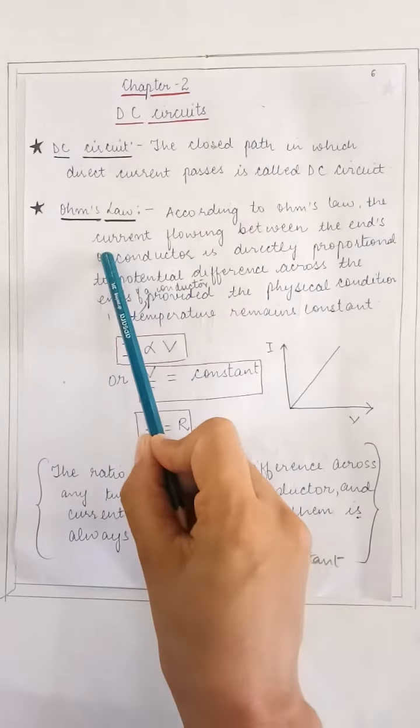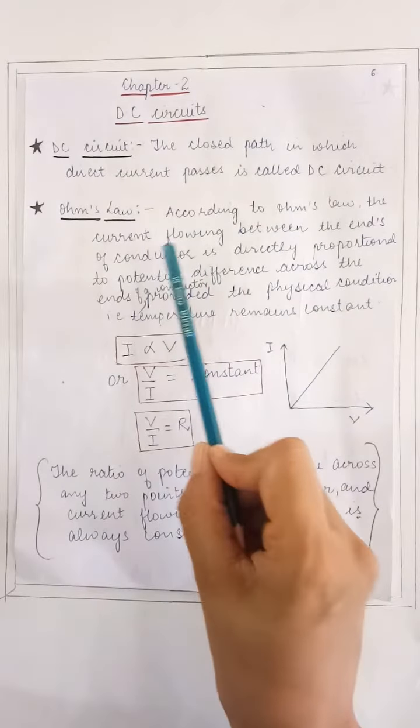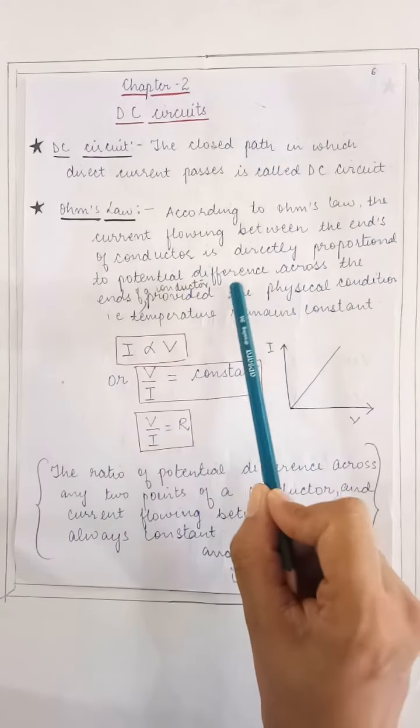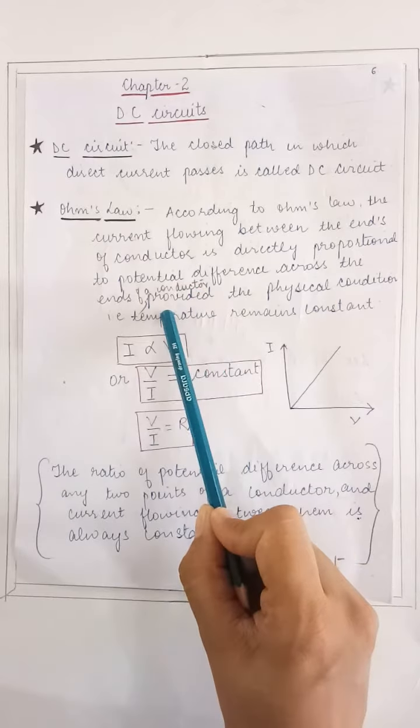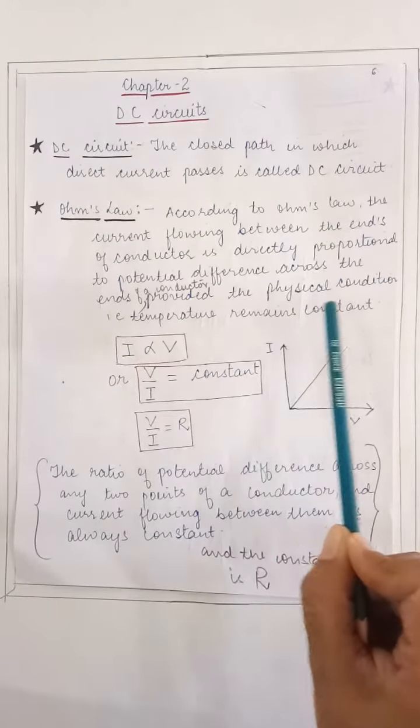First topic of this chapter is Ohm's Law. According to Ohm's Law, the current flowing between ends of the conductor is directly proportional to potential difference across ends of conductor provided the physical condition, that is temperature, remains constant.